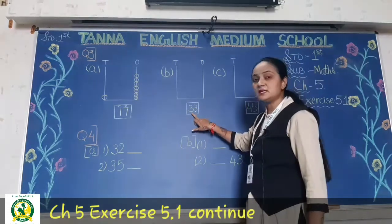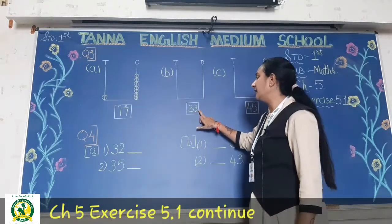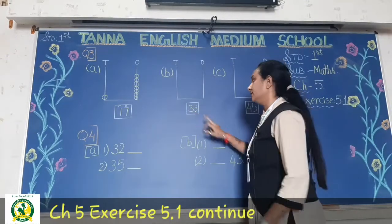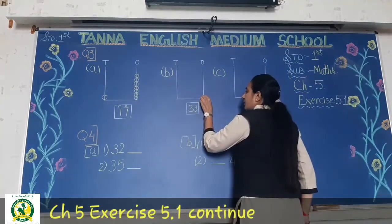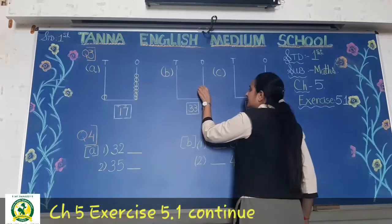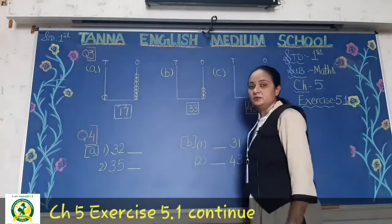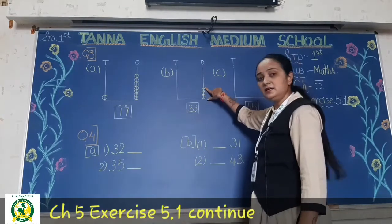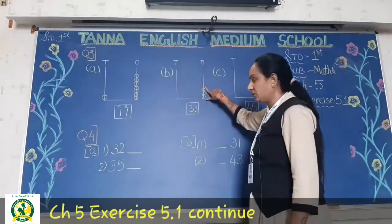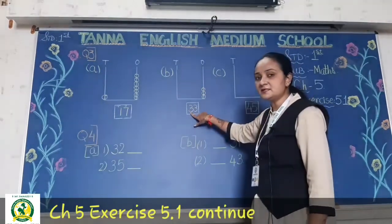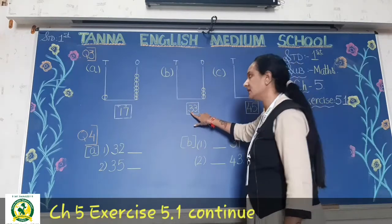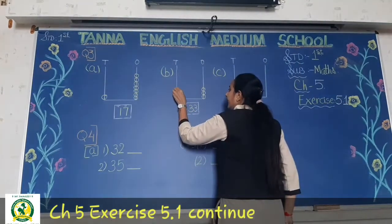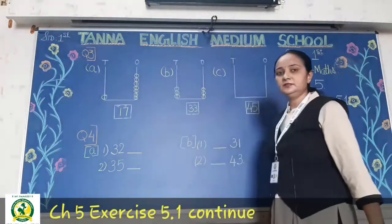Next one is 33. So first we have to draw beads at the ones place — we will draw 3 beads: 1st bead, 2nd bead, and 3rd bead. Okay, 3 beads here — 1, 2, and 3. Now at the tens place, how many beads will we draw? Yes, 3. So here also you have to draw 1, 2, and 3. Done.